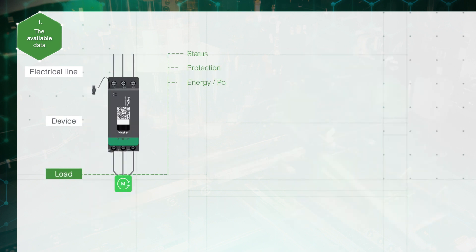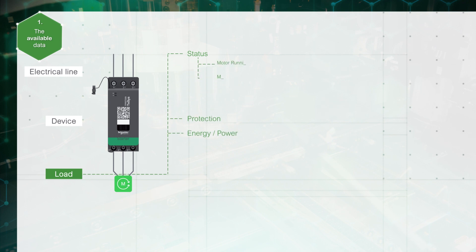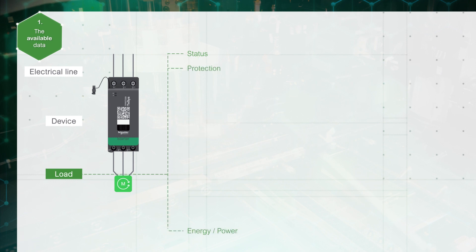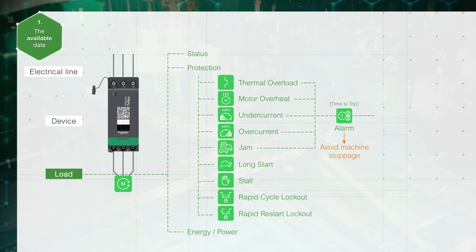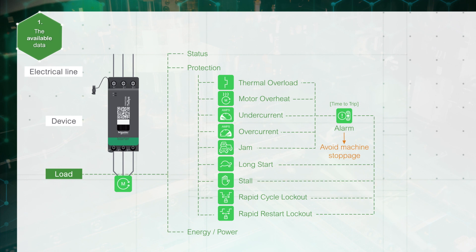At a load level, it is possible to monitor and control the load. There is information related to status, protection, energy, and power. For predictive maintenance or analytics purposes, the status information describes the status of the motor. There is also complete protection information — the user can be notified to avoid machine stoppage in case of jam, for instance.